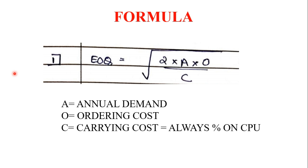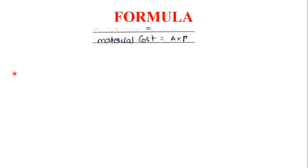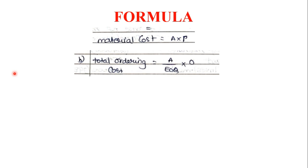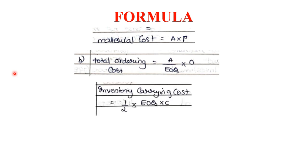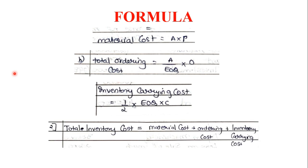After finding the EOQ, they will ask you to find the total inventory cost — meaning the total cost of having those many units or raw materials. For that, there is a set of formulas to learn. First: material cost = A into P (annual demand into cost per unit). Second: total ordering cost = annual demand divided by EOQ, into O (ordering cost). Third: inventory carrying cost = half into EOQ into C (carrying cost).